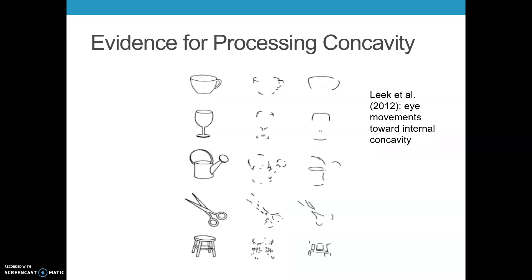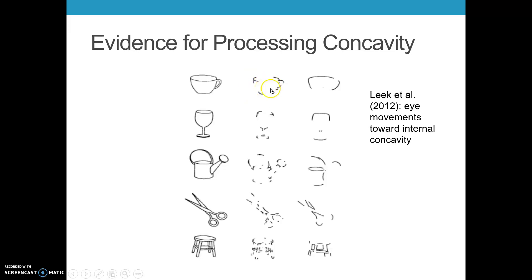Evidence for the importance of concavity: Leith and colleagues in 2012 found that eye movements focus more on concavity than convexity. Biedermann also showed people objects with concave areas removed versus preserved. When we keep concave areas and remove convex areas, objects are easier to identify. When concave areas are removed, objects become much harder to identify.